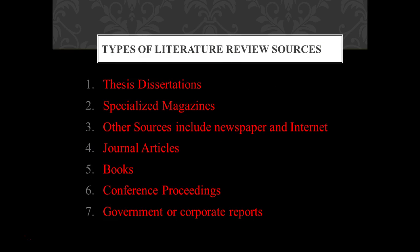There are several sources for a literature review. First, thesis and dissertation — they can be useful sources of information, however they can be difficult to obtain, and parts of the research presented may need to be treated with caution. Second, specialized magazines — these are sometimes considered as reputable as a journal and can provide a good starting point to find more reputable work. Other sources include newspapers and internet, which can point you to more reputable sources in general.